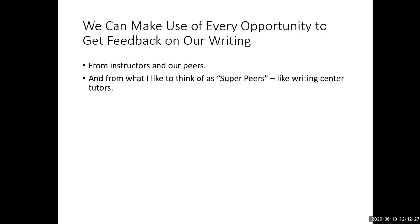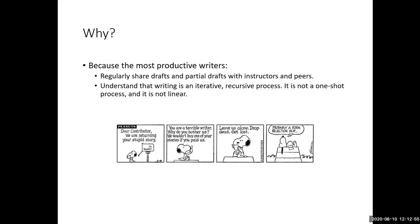Another thing we can do as graduate student writers is make use of every opportunity to get feedback on our writing. A lot of people find writing to be a very lonely, solitary activity, but it's not. We can get feedback on everything we write — even parts of what we write — from our instructors, from our peers and colleagues in class, and from what I think of as our super peers: writing center tutors. The most productive writers regularly share drafts and partial drafts with instructors and peers, and they understand that writing is an iterative, recursive process — not a one-shot, linear thing.